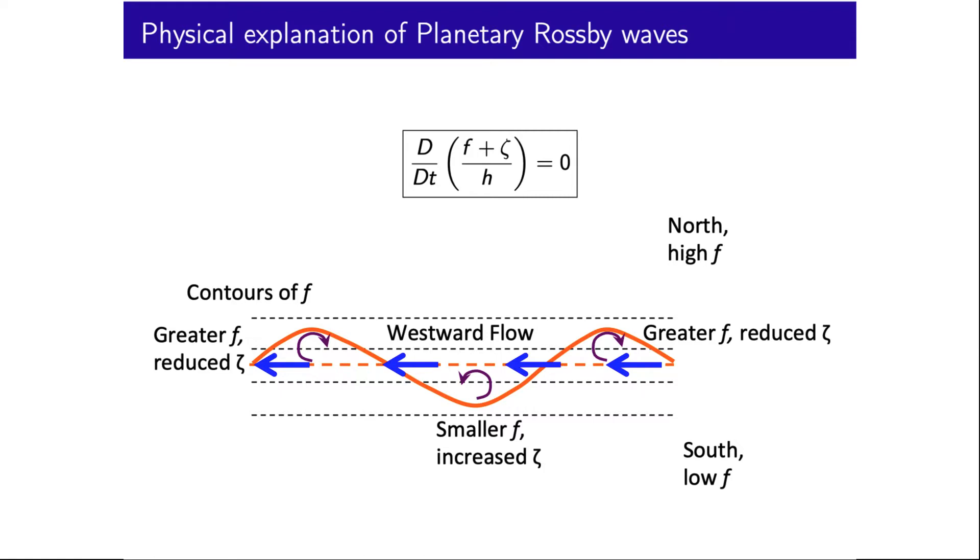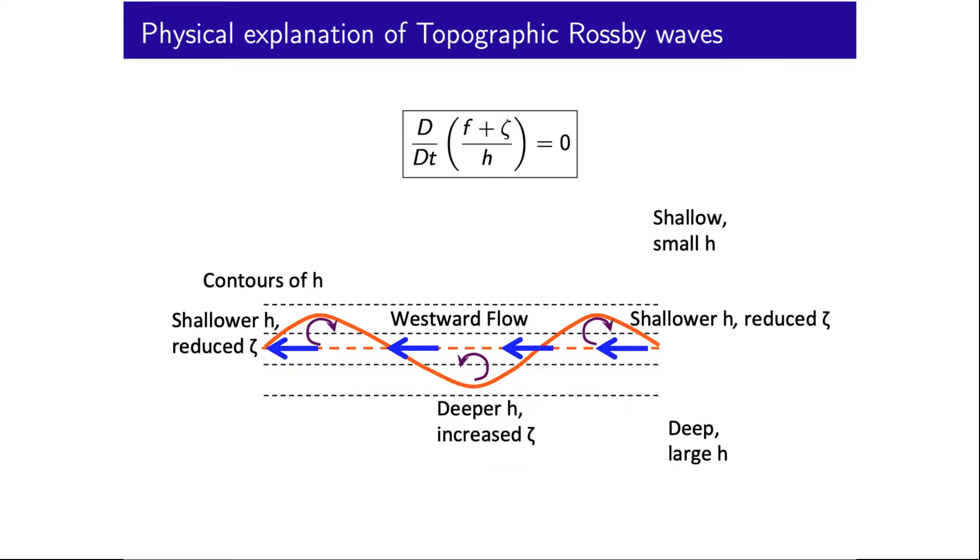Recall the physical implications of small flow perturbations in the presence of a gradient in f, and the generation of westward propagating planetary Rossby waves. Now consider the same case except for a gradient of H instead of f, where perturbations towards shallower waters tend to squash the water column, perturbations towards deeper waters tend to stretch the water column. In order to conserve potential vorticity with a reduced H, we must also reduce the absolute vorticity f plus ζ.